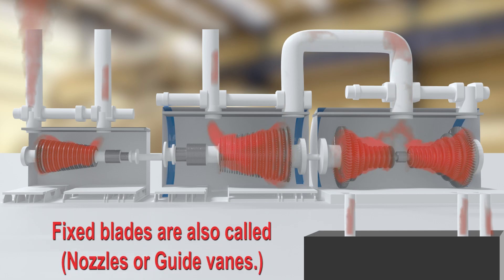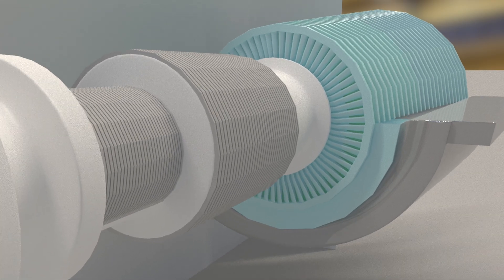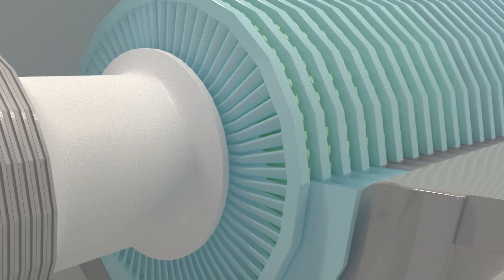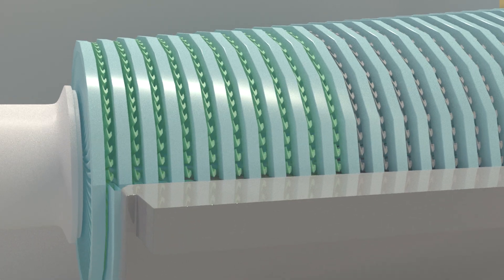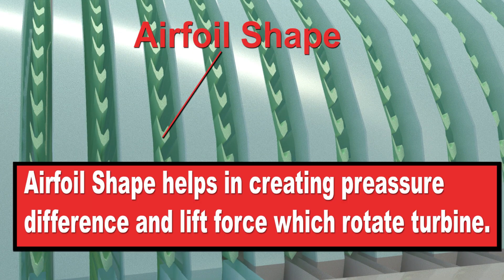These fixed blades are also called nozzles or guide vanes. If we see the cross-section of a blade, we find it has an airfoil shape, which helps in creating a pressure difference that in turn creates a lift force.